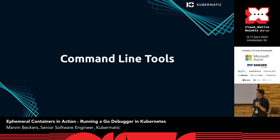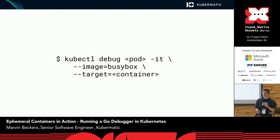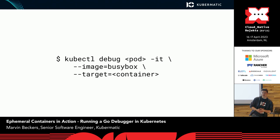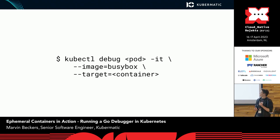We've established that ephemeral containers can be launched into existing pods. But how do you do that without writing a tool every time? The main option already available in the ecosystem is kubectl debug. kubectl debug is a very nifty toolbox to troubleshoot all kinds of issues within Kubernetes, and one of its features is launching an ephemeral container into a pod.